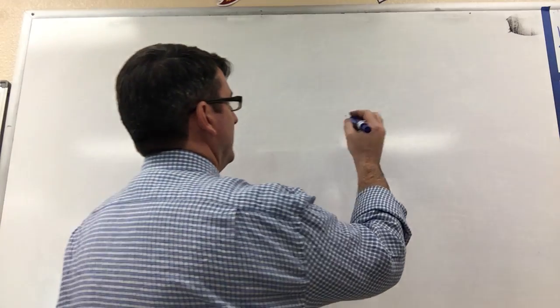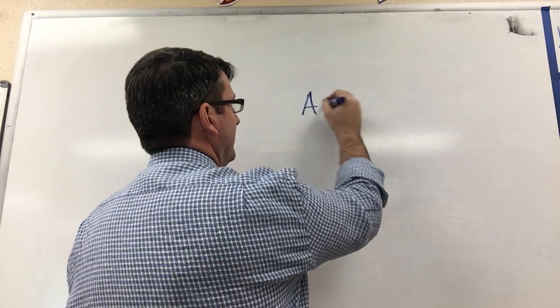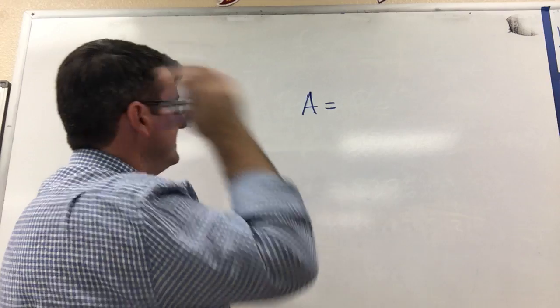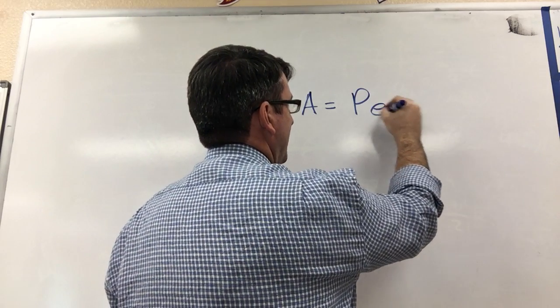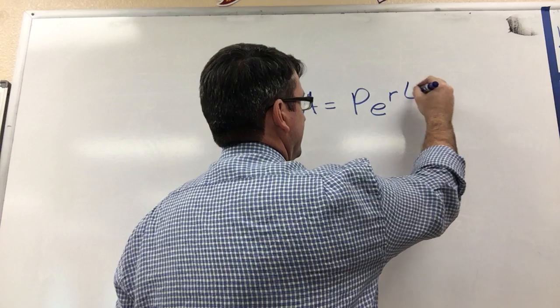So our continuously compounded interest formula is: the amount is equal to the principal times E to the rate times time.